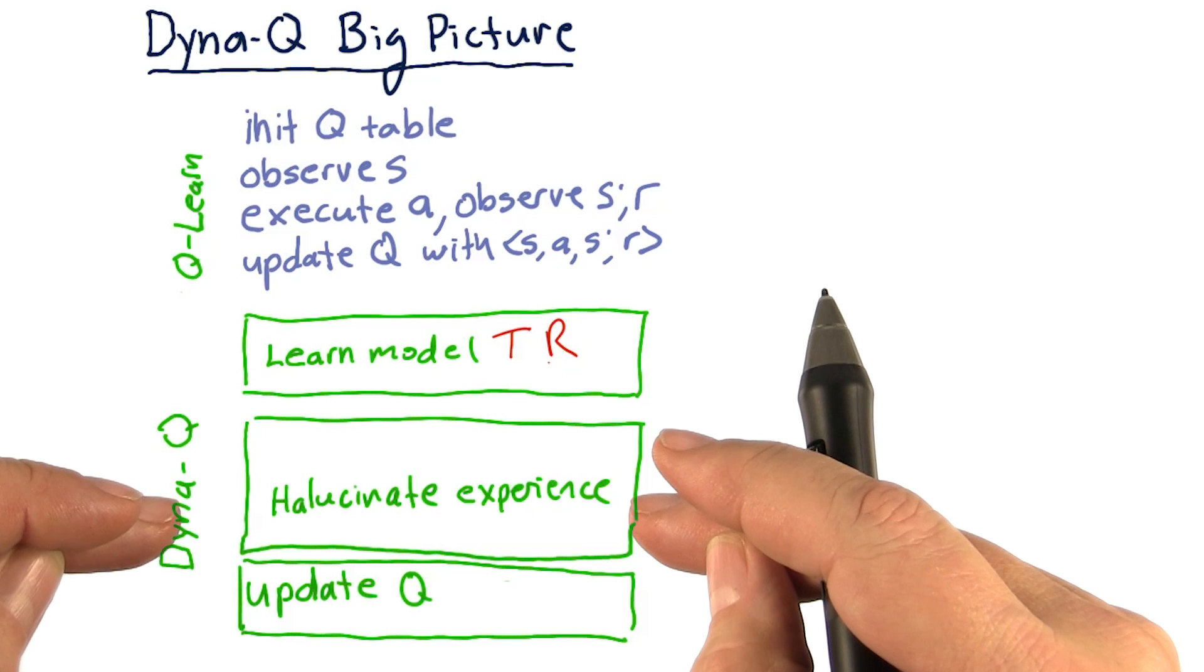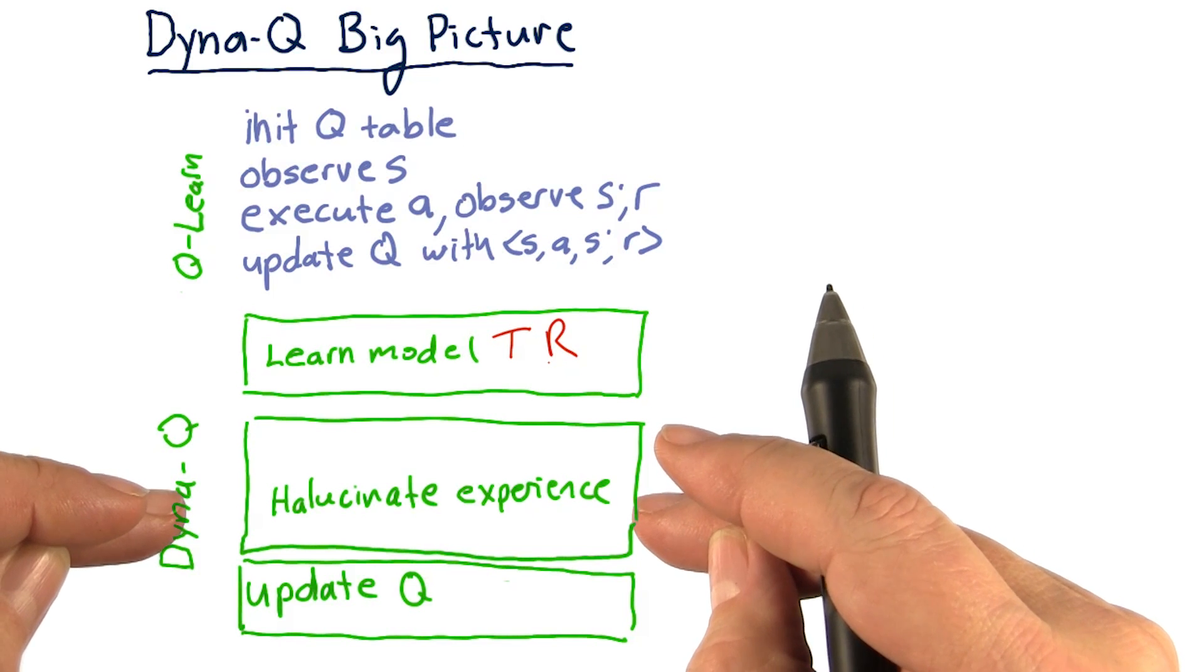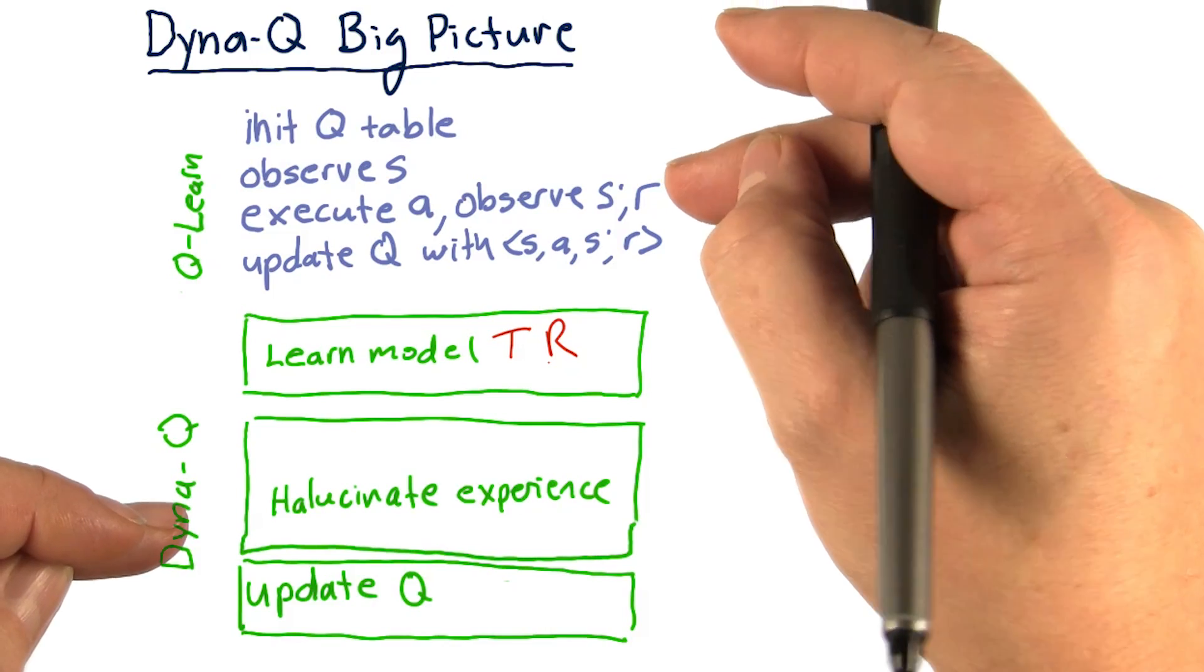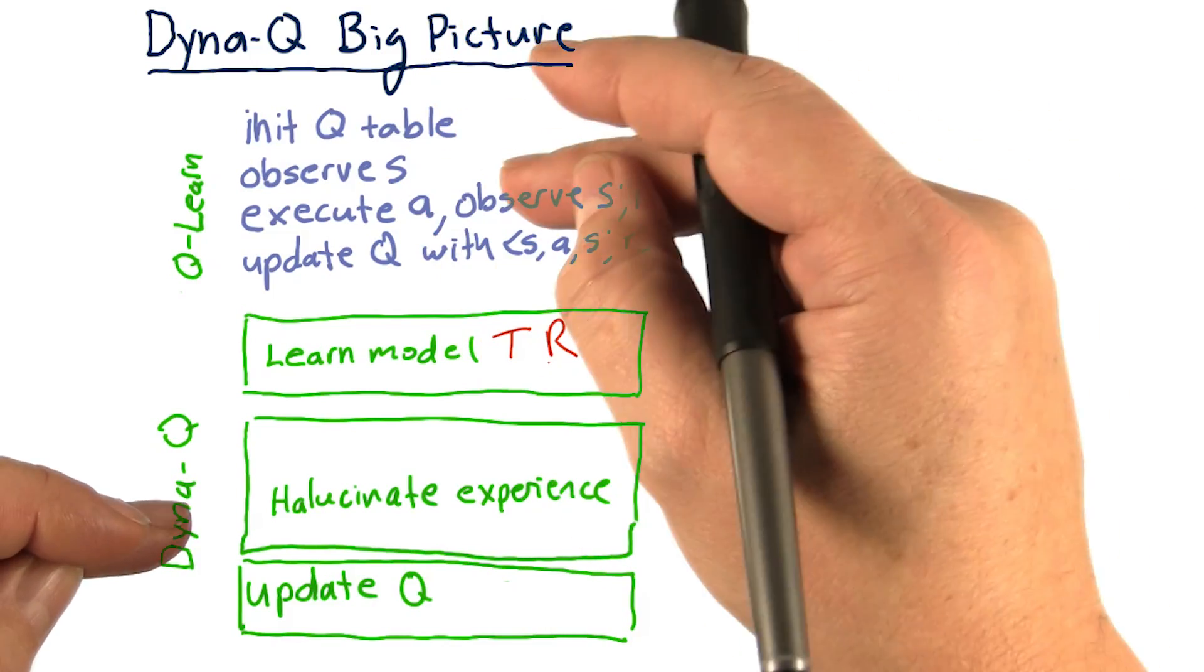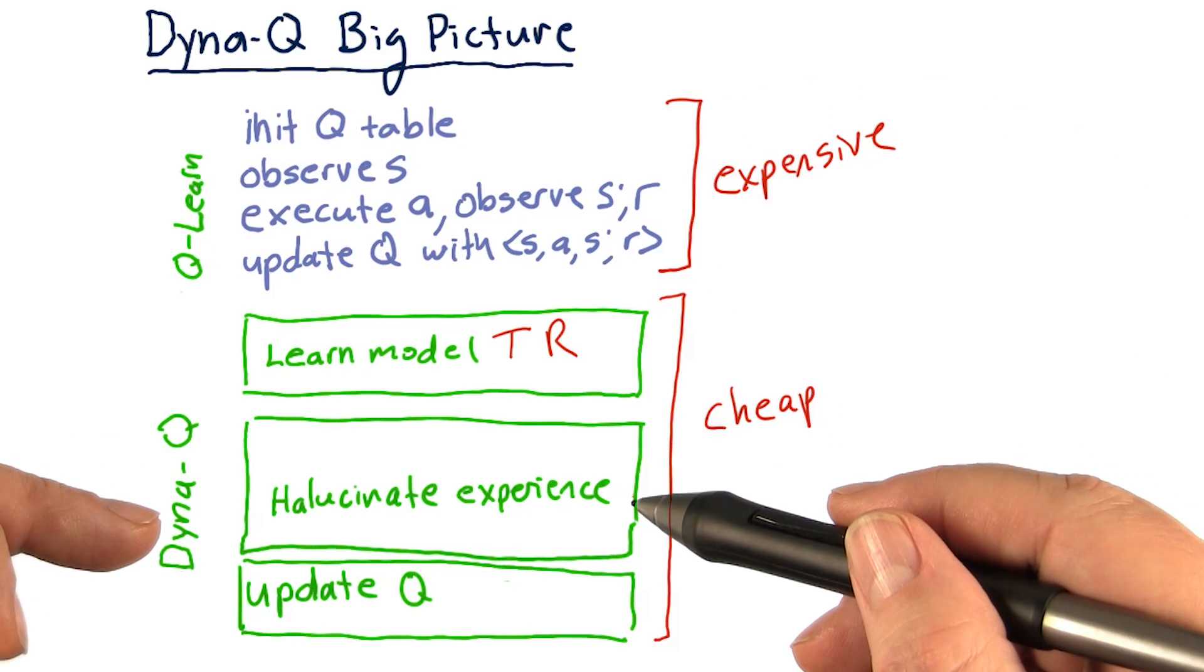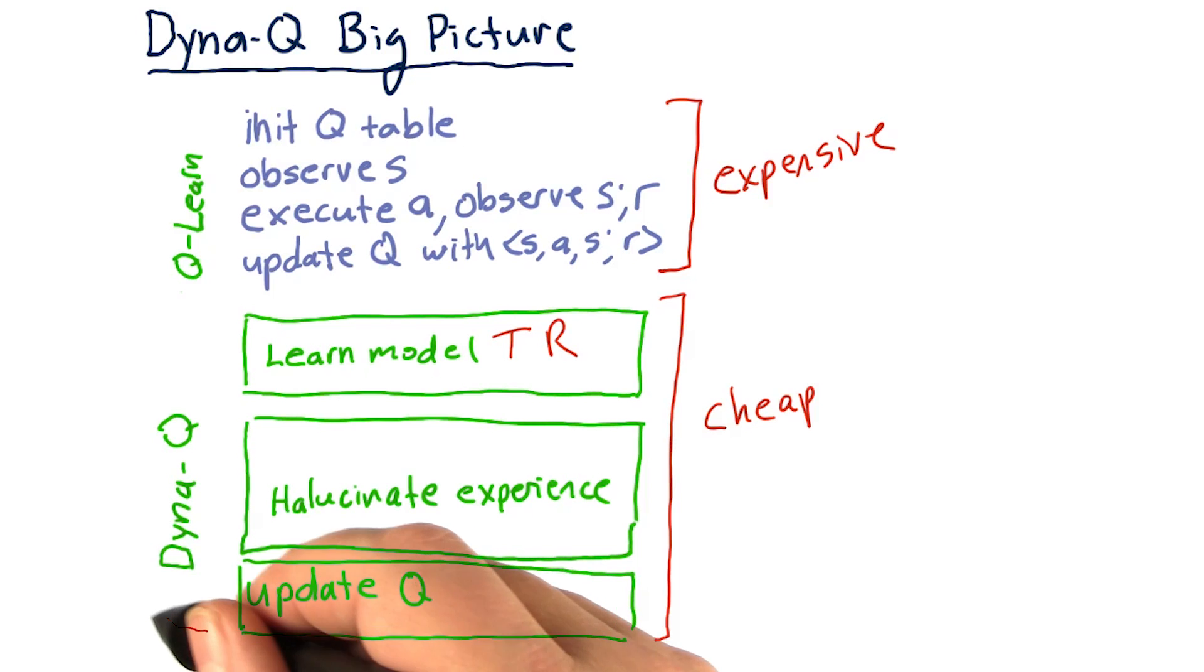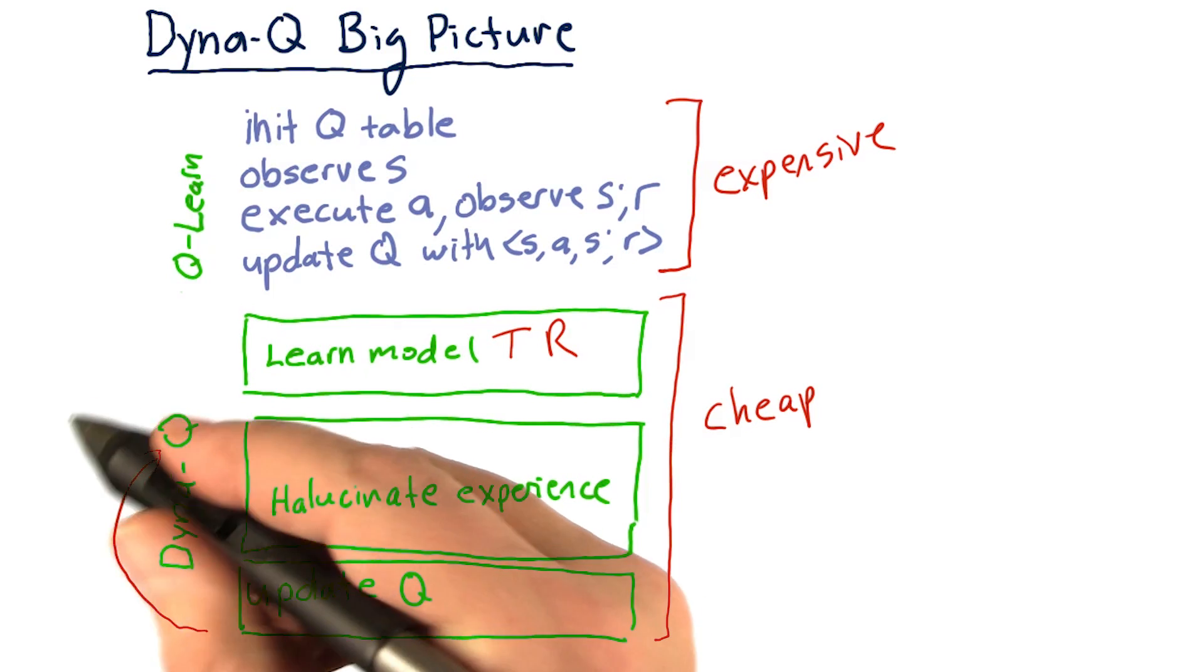Then, for lack of a better term, we hallucinate an experience. So rather than interacting with the real world like we do up here with the Q-learning part, and this is expensive by the way, we hallucinate these experiences, update our Q-table, and repeat this many times, maybe hundreds of times.